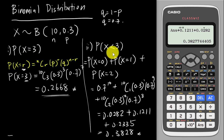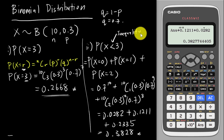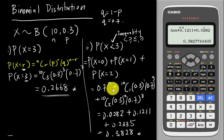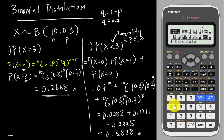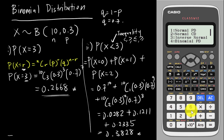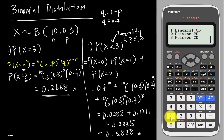The difference between example 1 and example 2: example 1 uses an equal sign, example 2 uses an inequality sign (less than). To handle inequalities on the calculator, you need Binomial CD — not PD. PD is for the equal sign; CD is for the inequality sign. Go to menu 7 (Distribution), then select Binomial CD, number 5, then variable mode 2.